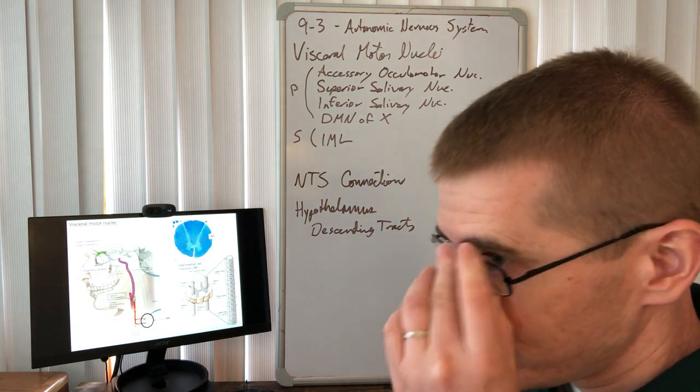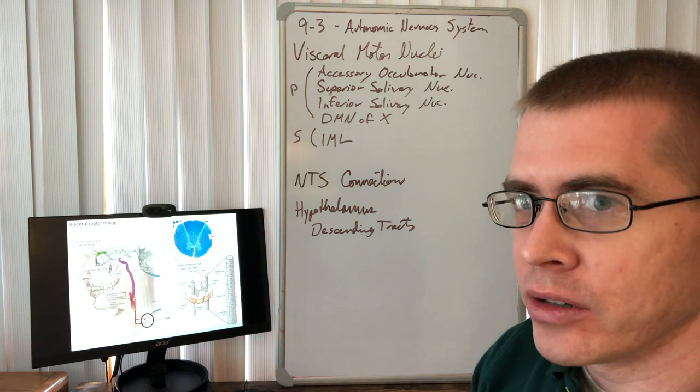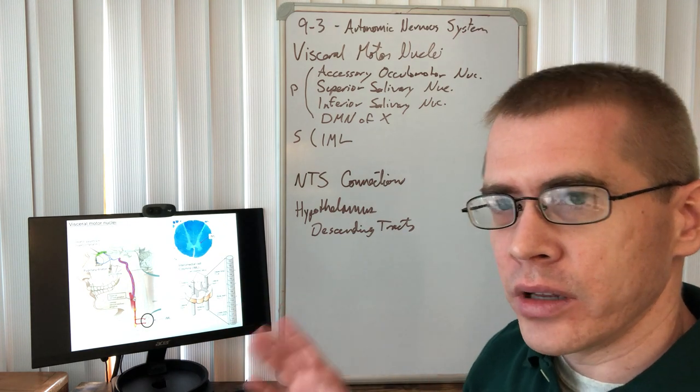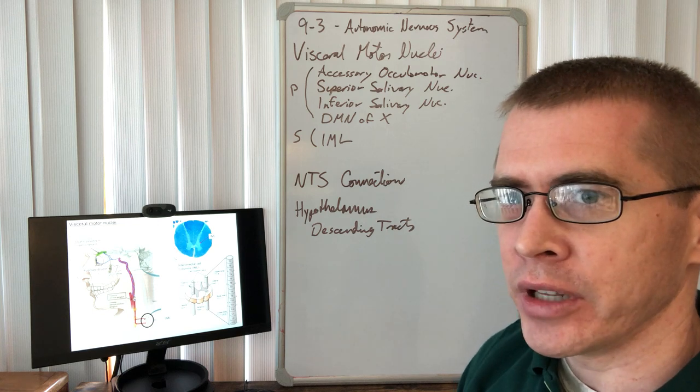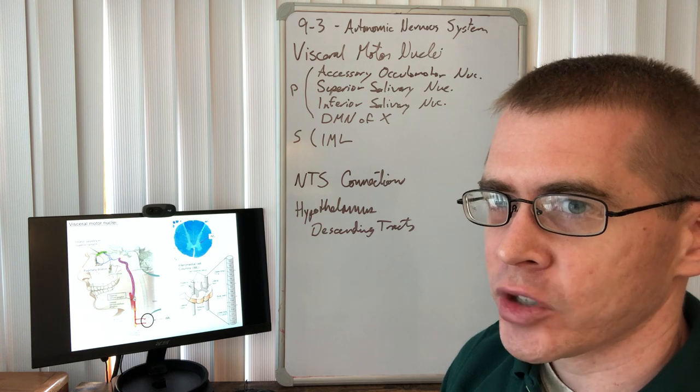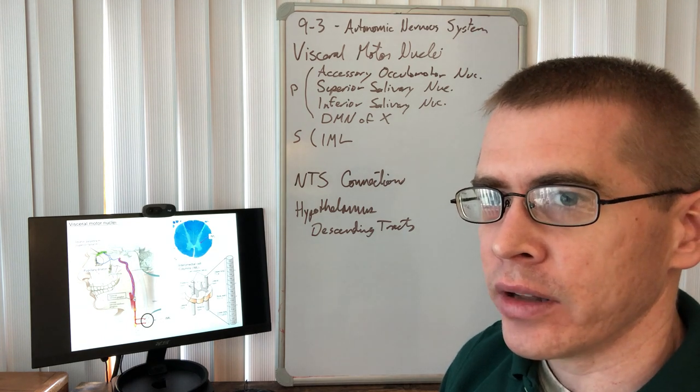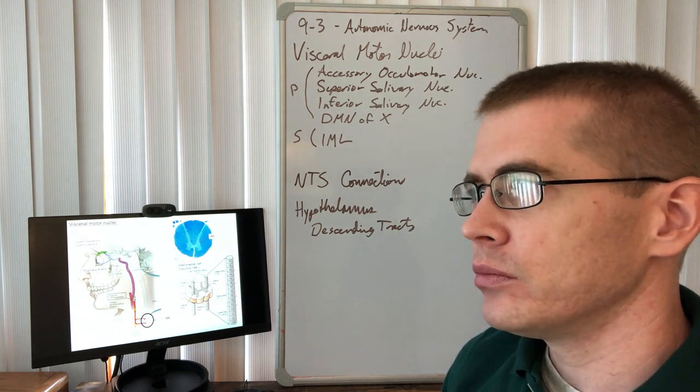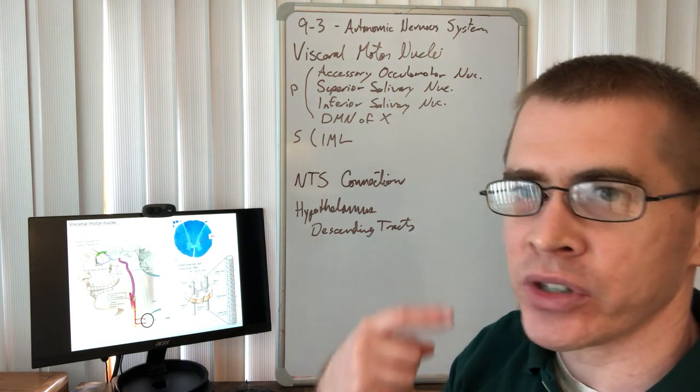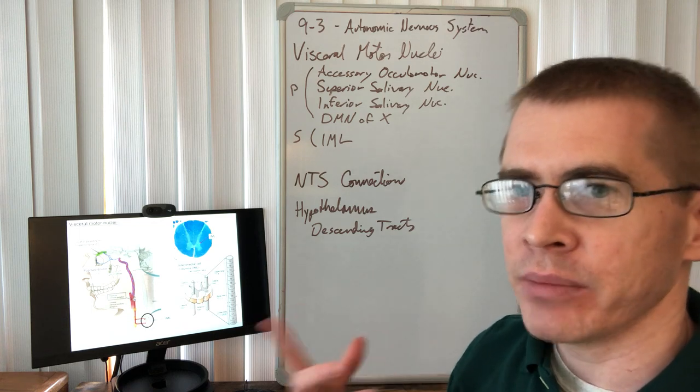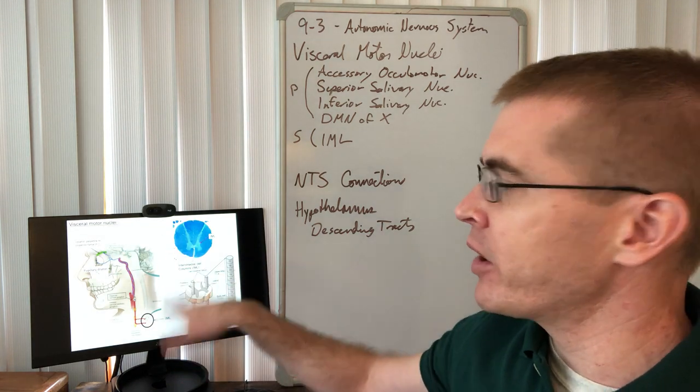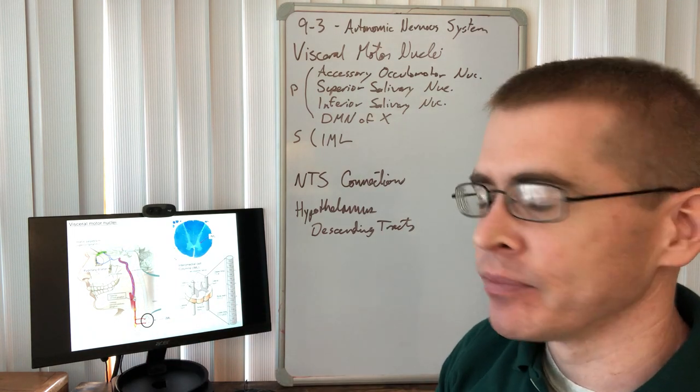Now the sympathetic nuclei are the intermediolateral subcolumn in the thoracic spinal cord. In order for those thoracic spinal cord neurons to produce their sympathetic functions in the rest of the body, they have to travel up and down the sympathetic chain. As I mentioned in the last video, these mostly synapse on the parasympathetic chain ganglions, or ganglia.